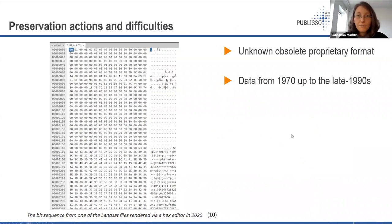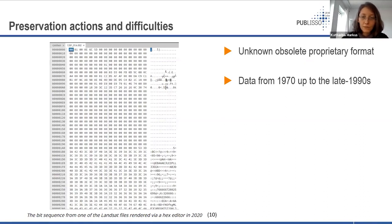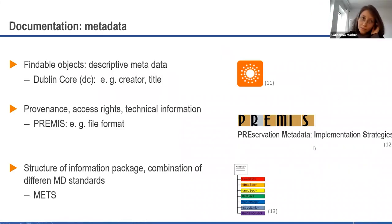An example of this problem: researchers had old data from 1970 up to the late 1990s and did not know what format it was — it was obsolete and proprietary. Opening it in a hex editor showed raw bytes. Eventually they found software that could render the content imperfectly but well enough to recognize what the file was supposed to be. If no such software can be found, the data is lost.